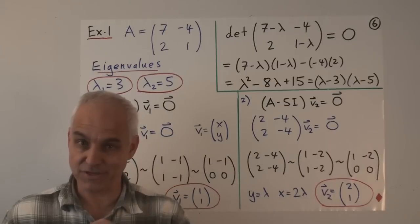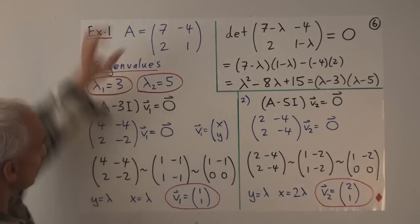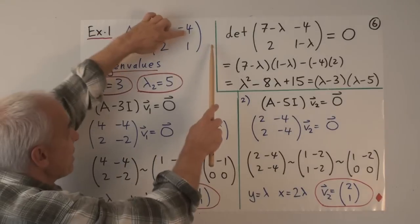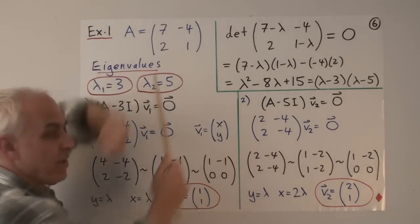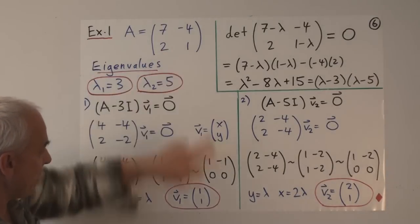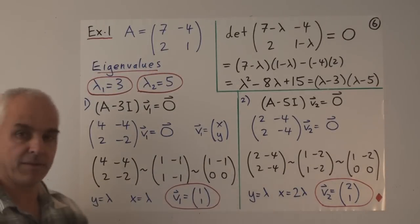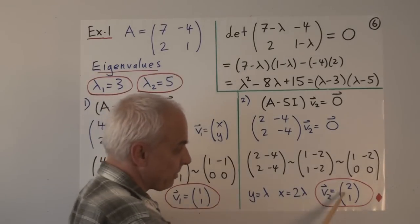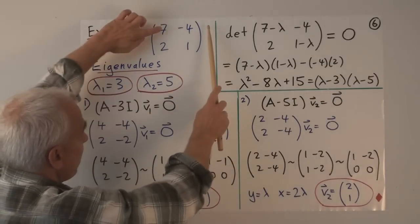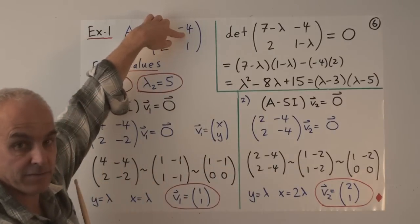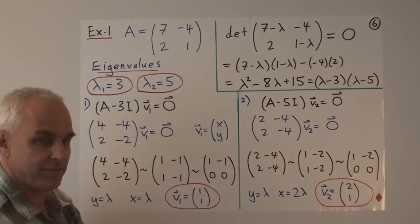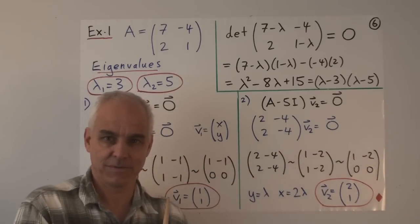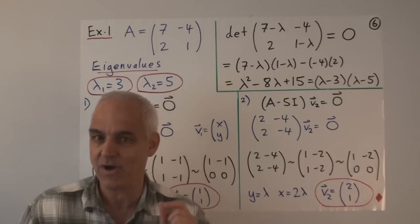We should check that we've done things right. Take the matrix A and multiply it by (1, 1): 7 minus 4 is 3, and 2 plus 1 is 3. So A times (1,1) equals (3,3), which is exactly 3 times that vector. On the other hand, A times (2,1): 14 minus 4 is 10, and 4 plus 1 is 5. So that's the vector (10, 5), which is exactly 5 times that vector. That's indeed the eigenvalue-eigenvector equation. Row reduction is the main tool.